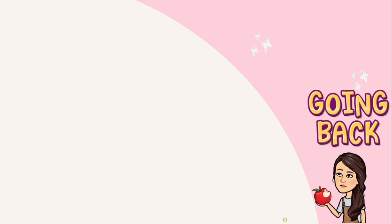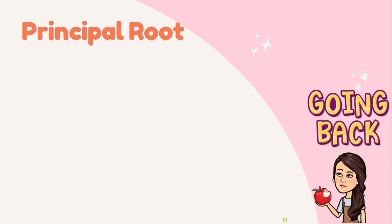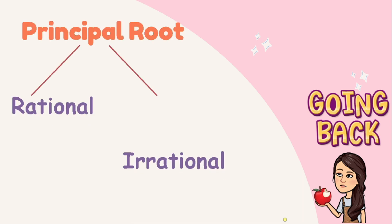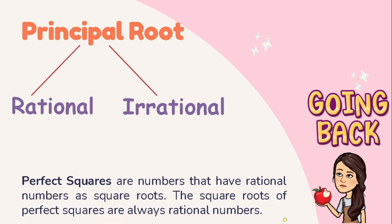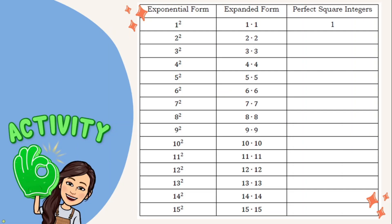In your previous lesson, you have learned how to describe the principal root if it is rational or irrational. Now, let us recall that perfect squares are numbers that have rational numbers as square roots. In other words, the square roots of perfect squares are always rational numbers. Specifically, we have perfect square integers. In this preliminary activity, I want you to complete the table by identifying the perfect square integers from number 2 to number 15. Number 1 was already done for you. You may pause the video while answering.